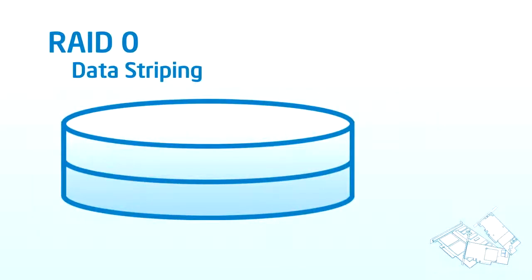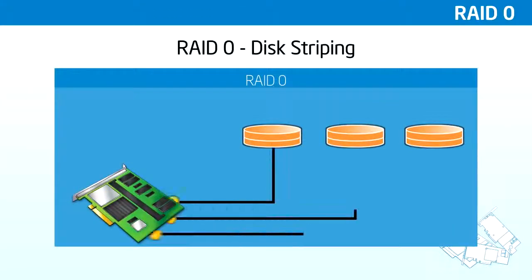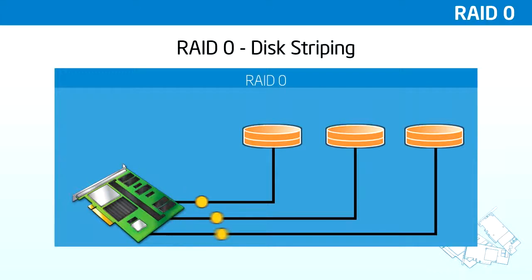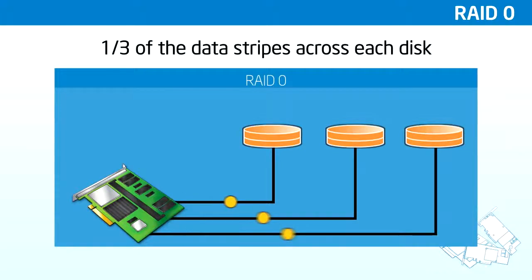RAID level 0 is simply striping. Striping takes a series of drives, groups them so they are presented as a single device to the host, and stripes the data across all these drives to improve performance. It certainly gives us a higher data transfer rate and is relatively low cost. The disadvantage here is that there is no redundancy or high availability. This doesn't mean that this RAID level isn't used. In fact, this RAID level is used with many applications in which performance and not data redundancy is important to your customer.